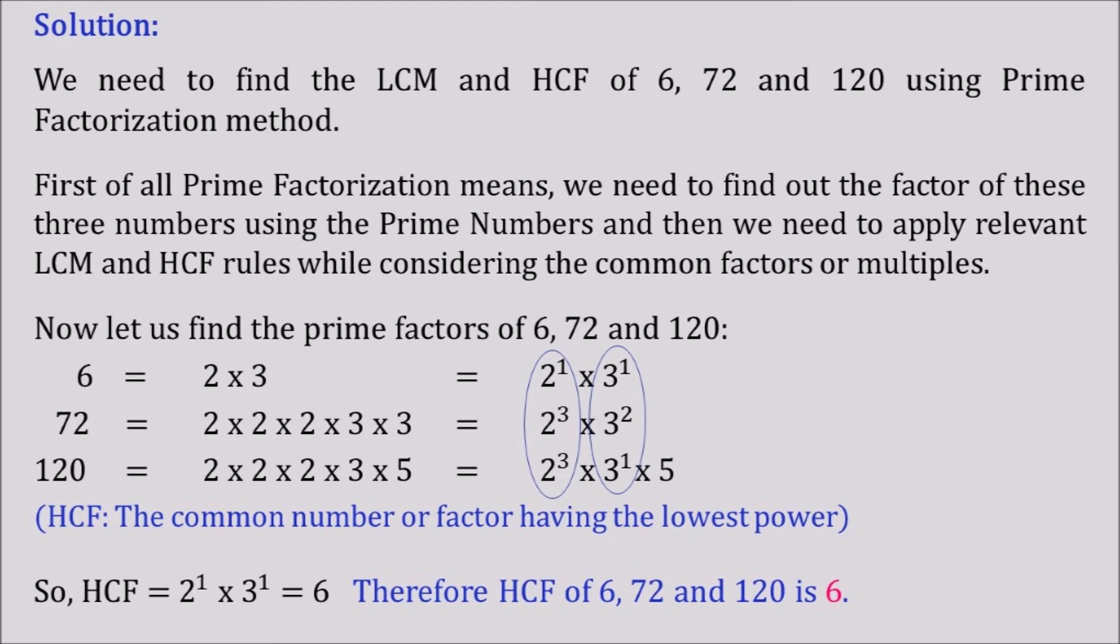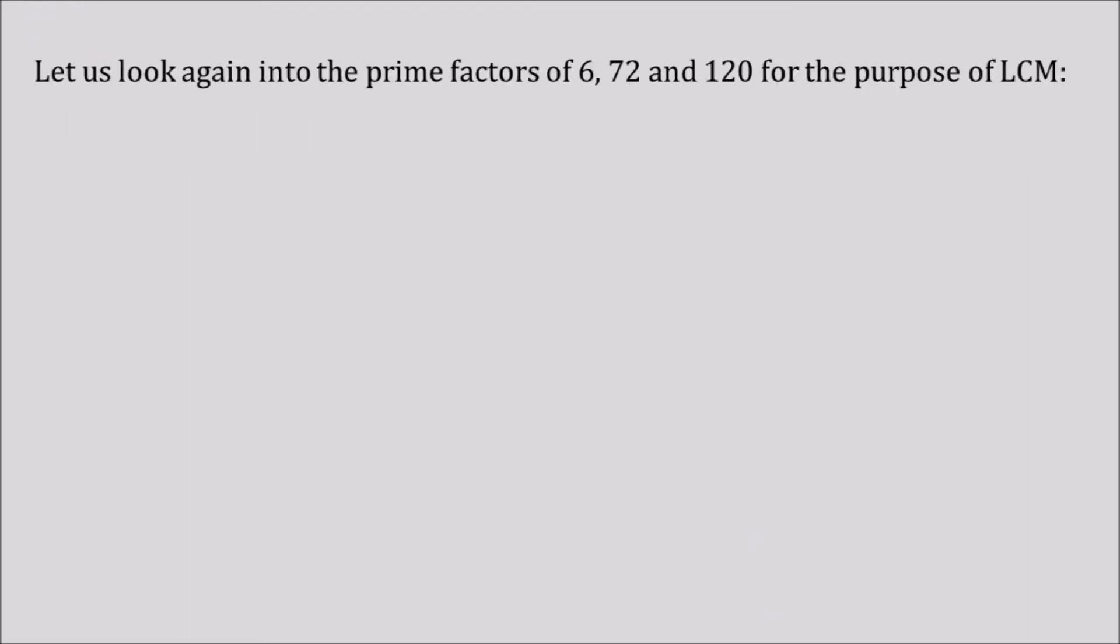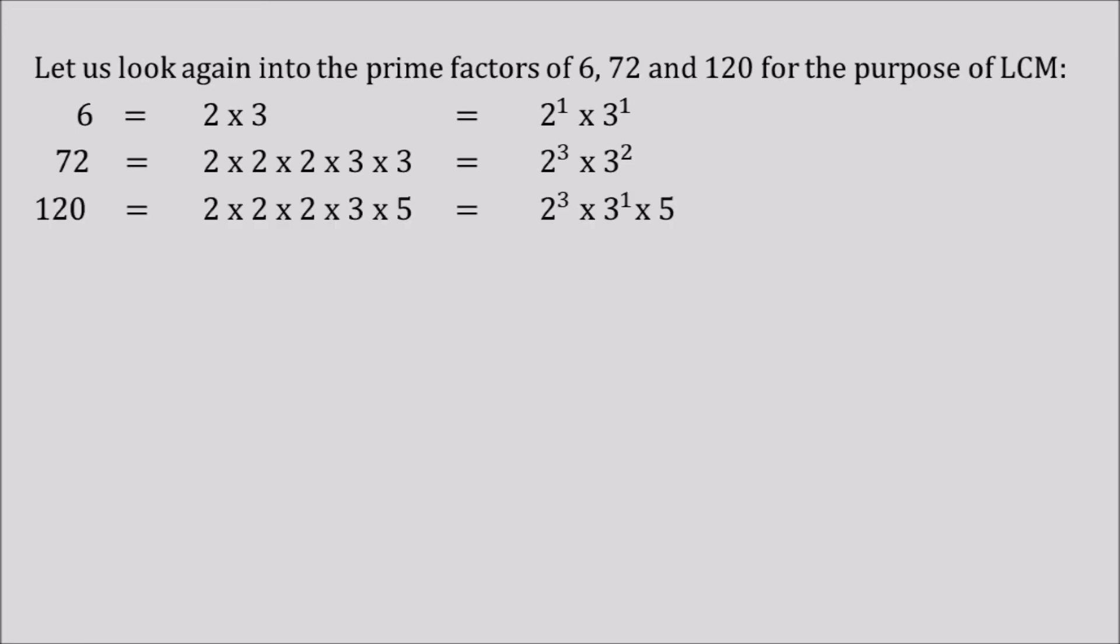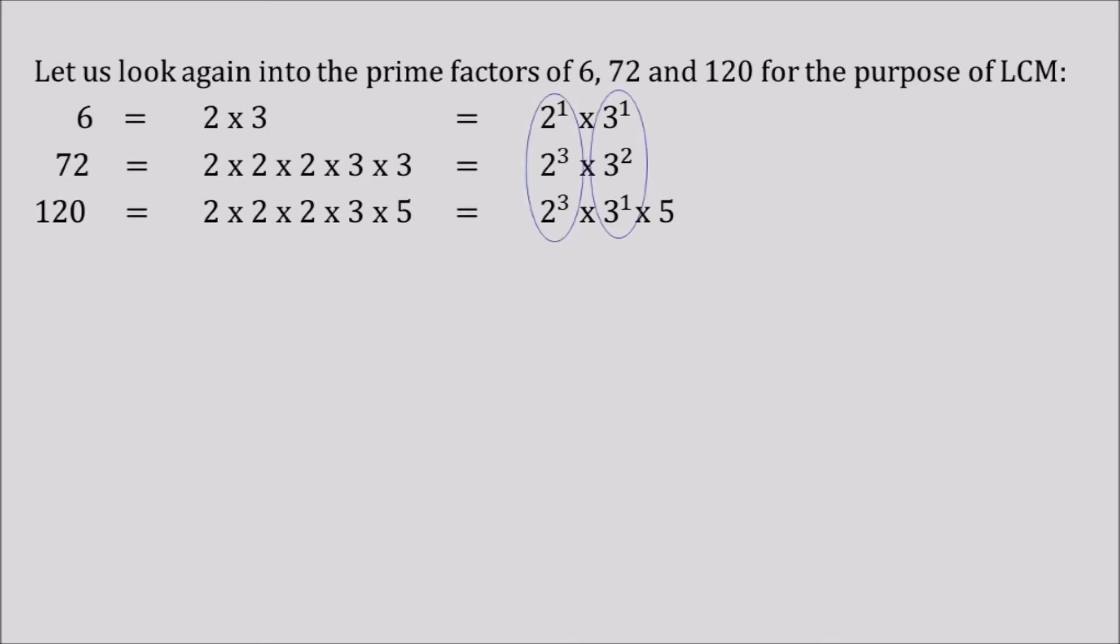Now let us look again into the prime factors of 6, 72 and 120 for the purpose of LCM. 6 is equal to 2 to the power 1 into 3 to the power 1. 72 is equal to 2 cube into 3 square and 120 is equal to 2 to the power 3 into 3 to the power 1 into 5. We know that 2 and 3 both are the common factors for these three numbers.